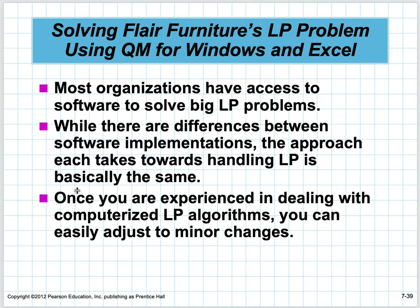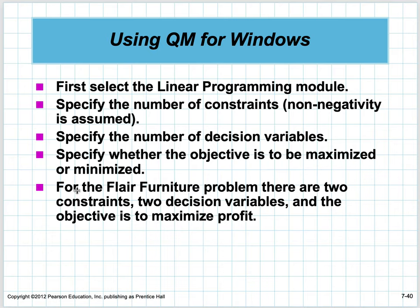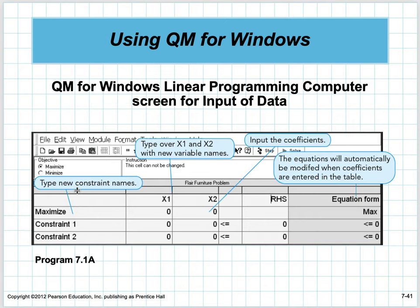The graphical method and corner point evaluation only works in two dimensions with two variables. For more than two products, you need software. The software we'll use is Solver in Excel, added the same way as Data Analysis. QM software actually uses Solver as an overlay that helps guide you to set the problem up.